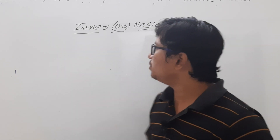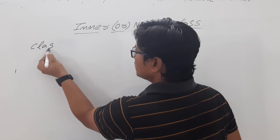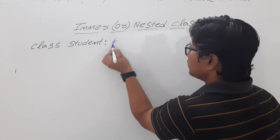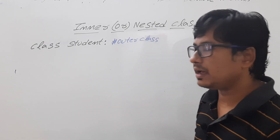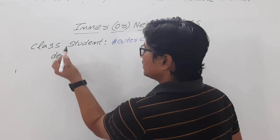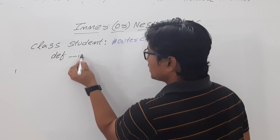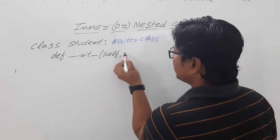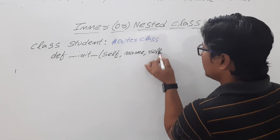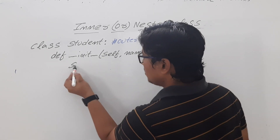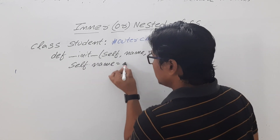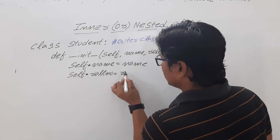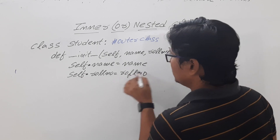Let me first write a class called Student — this is my outer class. Inside this outer class I have an init method and a display method. The init method is the constructor, so we write underscore underscore init, then define the parameters name and roll number. Then self dot name equals name and self dot roll number equals roll number.